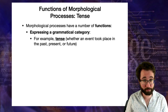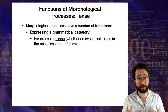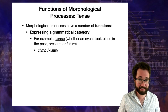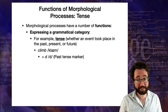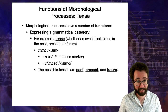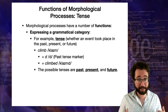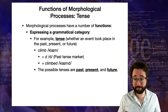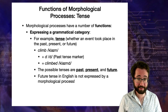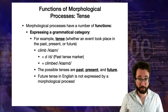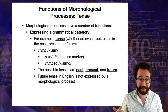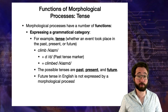Another major grammatical category often expressed using morphological processes is tense, which indicates whether an event took place in the past, present, or future. In English, we have the verb 'climb' in present tense; we add the suffix D — the past tense marker — and get 'climbed', an affixation process expressing past tense. The possible tenses are past, present, and future. Interestingly, the past tense in English is expressed using morphology, but the future tense is not — instead, you say 'I will go' or 'I'm gonna go', using a separate word.